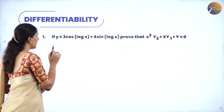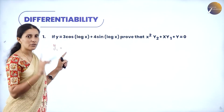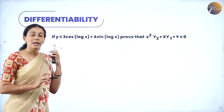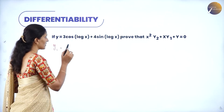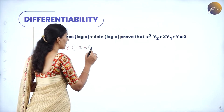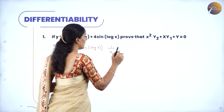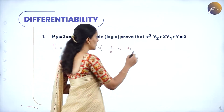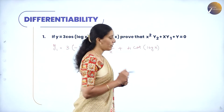Let us find y1, which is dy/dx, deriving this for the first time. Since this is a composite function, we apply the chain rule. 3 is constant, so we write 3 as it is. The derivative of cos is minus sine, so this becomes minus sine(log x). But log x is one more function, so the derivative of log x is 1/x. Plus we have 4sin(log x) — 4 is constant. Derivative of sin is cos, so this becomes cos(log x), and again the derivative of log x is 1/x.